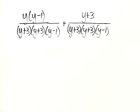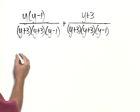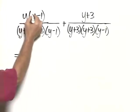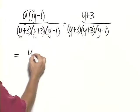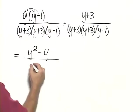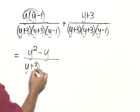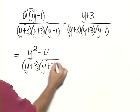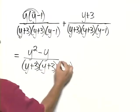Now that we have them over the same denominator, let's continue to simplify. So, this would be equal to y squared minus y over y plus 3 times y plus 3 times y minus 1,